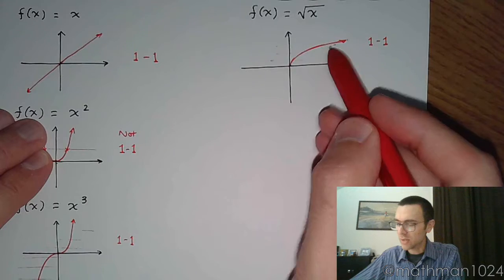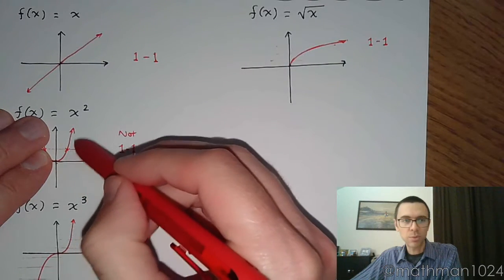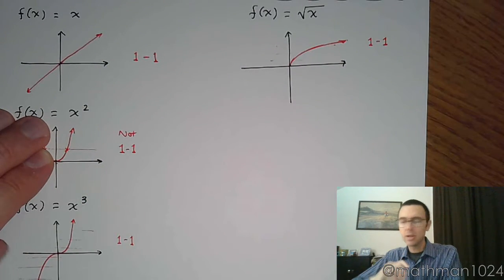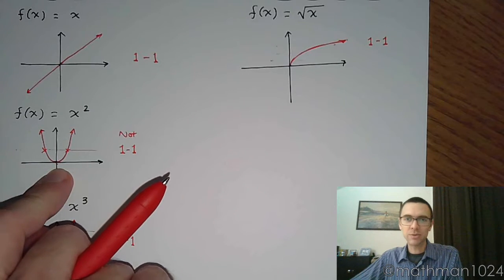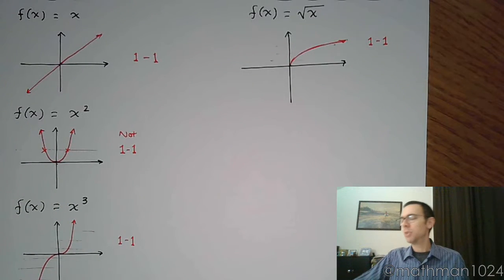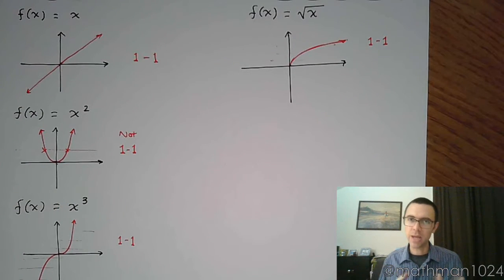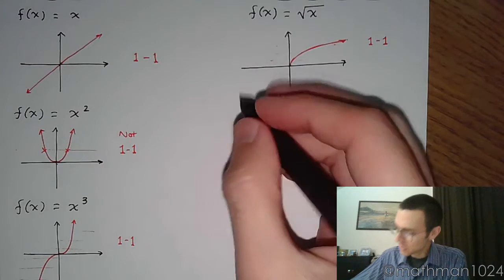So this guy has an inverse which would just be this part of the parabola with a restricted domain. But this guy does not have an inverse. I know it's kind of weird, but it all comes down to restrictions on domain and range.